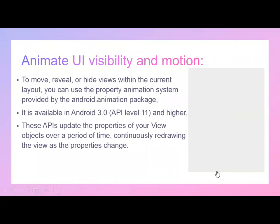Next is animating UI visibility and motion. To move, reveal, or hide views within a current layout, you can use the property animation system provided by the Android animation package. It is available in Android 3.0 or API level 11 and higher. These APIs update the properties of your view objects over a period of time and continuously redraw the views as the properties change.